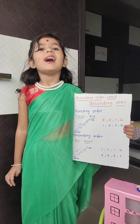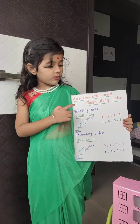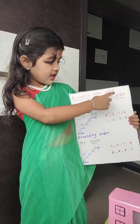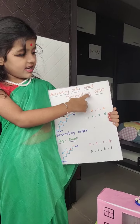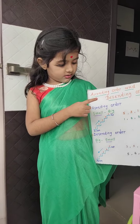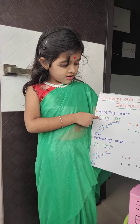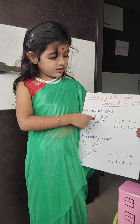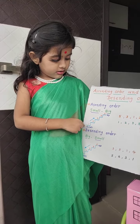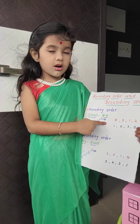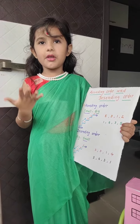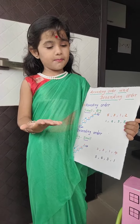Good morning everyone. I teach you about ascending orders and descending orders. Ascending orders means you have to go from small number to big number, like a down chain to upper chain. I give you an example.